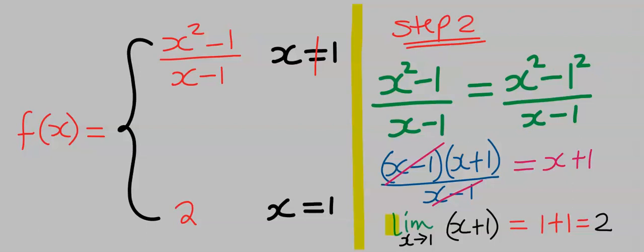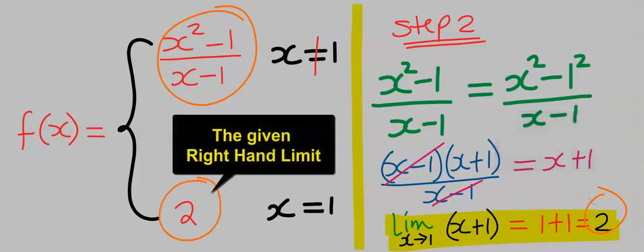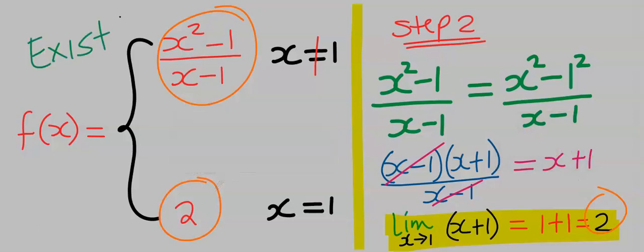Next, we are going to take the limit of the function as x tends to 1, and we got 2. We solved the upper arm, which is the left-hand limit, and we got 2. Likewise, the lower arm, which is the right-hand limit, has 2. This means that this limit exists.